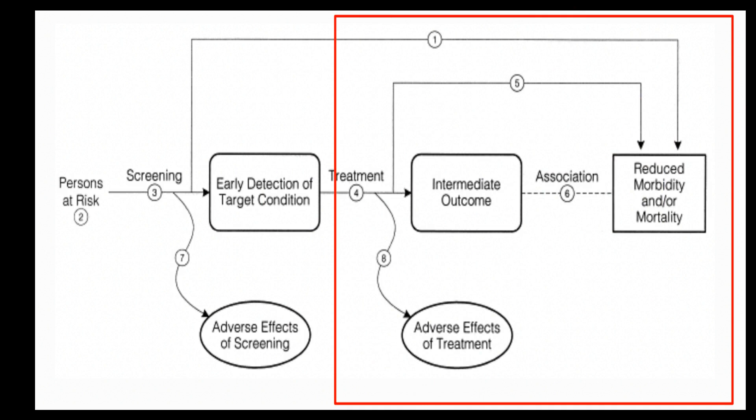By drawing it this way, you can see the different questions: the effectiveness of screening, the possible harm, the effectiveness of early detection, and possible harm. You can look at intermediate outcomes, and you would have to define what they are. And you can look at the final outcomes — reduced morbidity and mortality at a later date. So that would be a sample working format.